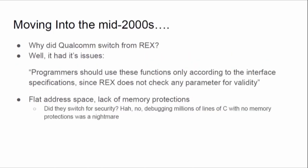Moving out of the nineties and into the mid-2000s, Qualcomm decided to switch away from Rex. They didn't do it for security reasons — it's just really tricky to debug code when you have no memory protections. You don't know whether something's being caused by your code accidentally overwriting other code. If you dig through some of their ancient documentation, you can find Rex didn't even do any parameter validation. They basically told you whatever you passed their API better be right because they weren't going to check it. It's great for finding bugs, but sadly they moved away from this to something more secure.